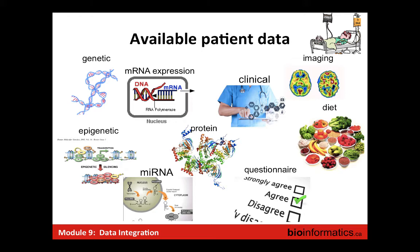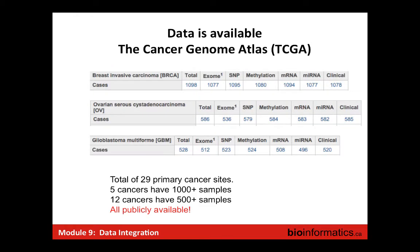The question is: can we really integrate all of this data to understand how to treat the patient and to refine their prognosis and diagnosis? For developing or testing methods, publicly available data is key. The Cancer Genome Atlas is a phenomenal repository of publicly available cancer data with 29 primary cancer sites and five cancers with over a thousand samples each — for example, breast invasive carcinoma has over a thousand genotype and methylation samples. With this kind of data you can start doing something with more complex methods.